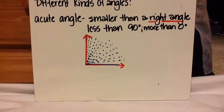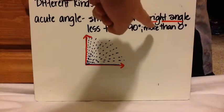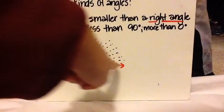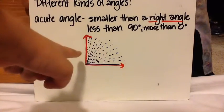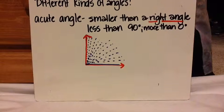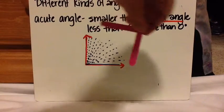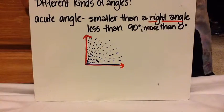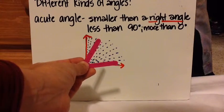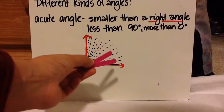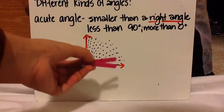The next one is an acute angle. An acute angle is smaller than a right angle. I drew the right angle here so you can compare. An acute angle would be smaller than that — all the different angles that are less than a right angle. If a right angle is 90 degrees, then an acute angle would be less than 90 degrees, but it has to be more than zero degrees. All of this range is considered an acute angle, and it's all less than 90 degrees.